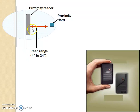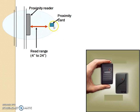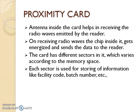In this sketch, we can see the proximity reader which is fixed or mounted on the wall. The proximity card is something which we bring near to the device — that is called the read range. In this particular image, the read range is 4 to 24 inches, roughly 2 feet. When the card comes within this 2 feet, the interaction happens between the card and the reader. Inside the proximity card, there is an antenna which helps in receiving the radio waves emitted by the reader. On receiving the radio waves, the chip inside gets energized and sends back the data to the reader.